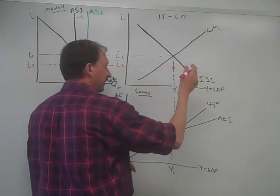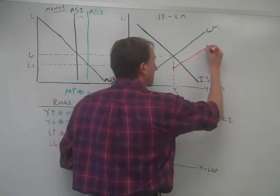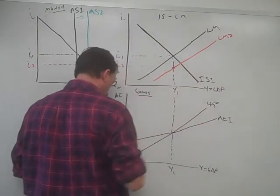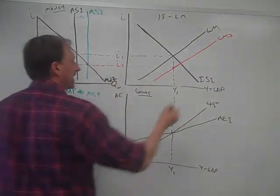Think Etch-A-Sketch, left and right, up and down. And so all the points on LM have to shift down, similar to that one, so you get a new LM curve, which looks like that.